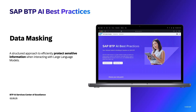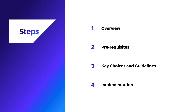Our discussion will follow these four key steps. First, we'll provide an overview of outcome benefits and key concepts of data masking. Second, we'll cover the essential prerequisites you'll need to have in place before implementation, including both commercial and technical requirements. Third, we'll explore the key choices and guidelines that will impact your implementation, including masking techniques and masking rules that ensure data cleanliness and compliance. Finally, we'll dive into the implementation details across different programming models, providing you with concrete examples and resources.